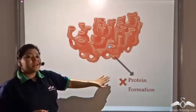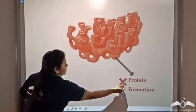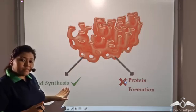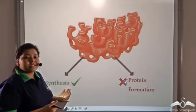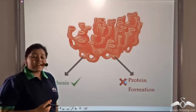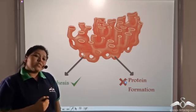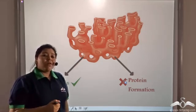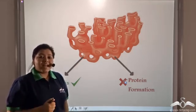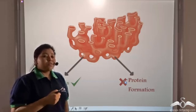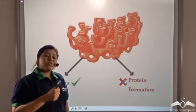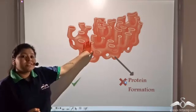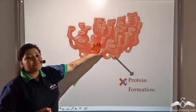The smooth endoplasmic reticulum helps the cell manufacture lipids. Lipids are a kind of fat. Recall that the cell membrane is made up of lipoproteins, which are made of lipids and proteins. So those lipids that make up the cell membrane are manufactured by the smooth endoplasmic reticulum.